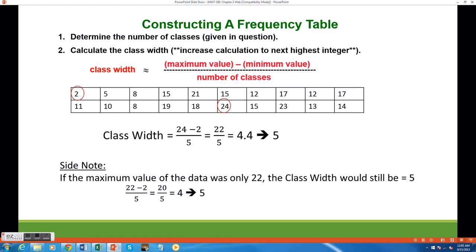We subtract those two numbers and divide it by 5, because 5 is the number of classes that we are using in this example problem. The result of that calculation is 4.4, but we want to increase the value to the next highest integer, which would be 5. So our class width for this problem will be 5.